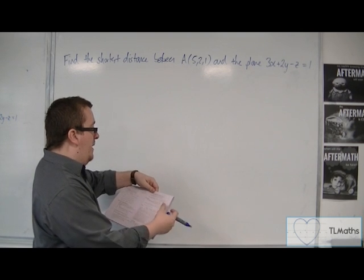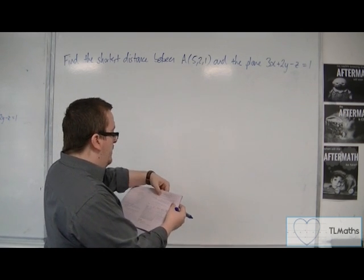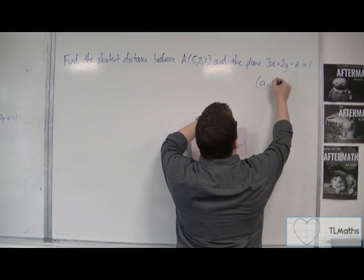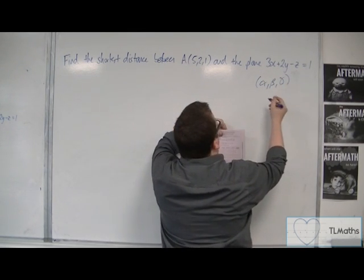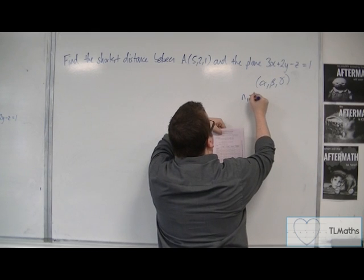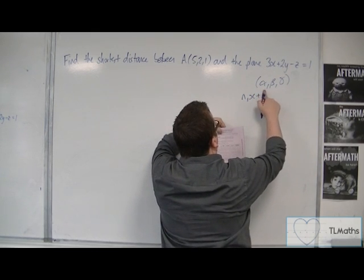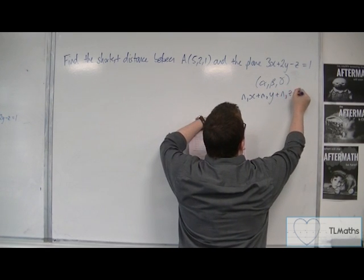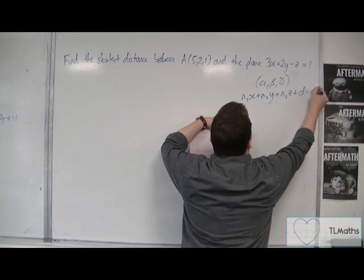Perpendicular distance of a point from a line and a plane, and we want the second one. So, if you have a coordinate alpha, beta, gamma, and you have the equation of a plane, n1x plus n2y plus n3z plus d equals 0,